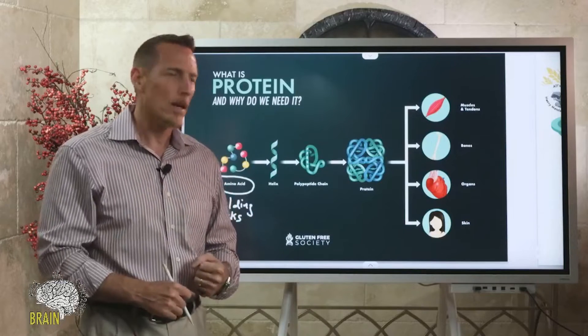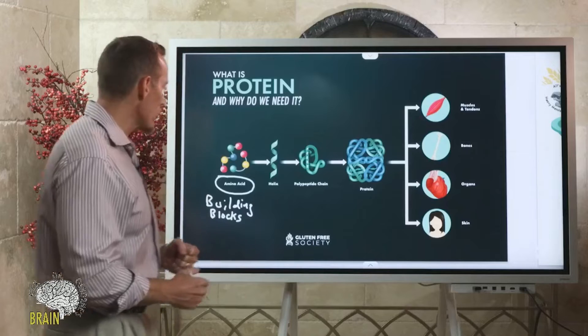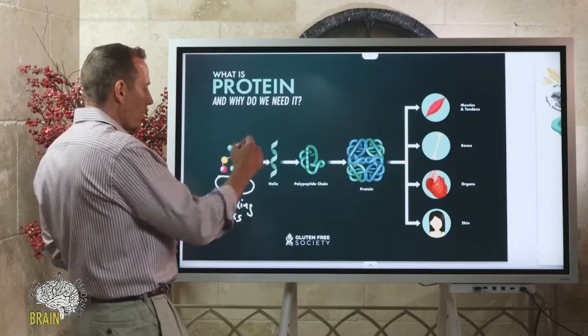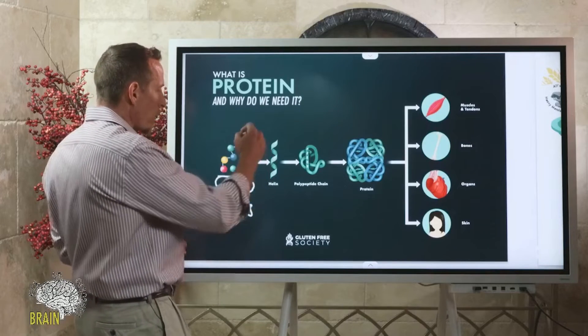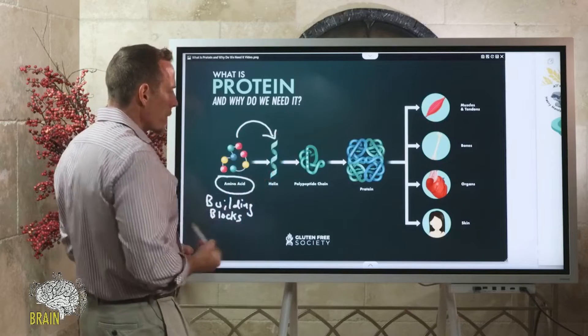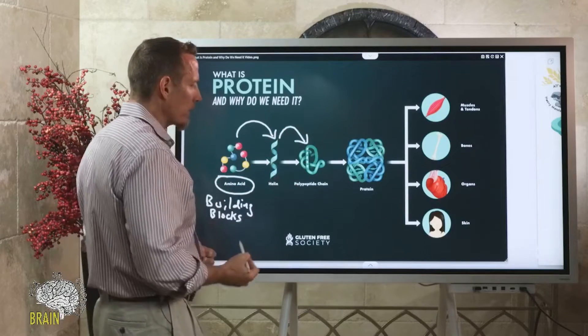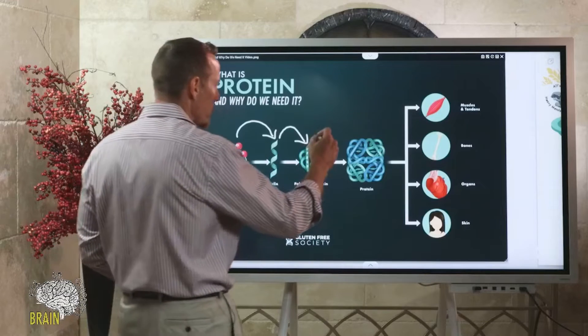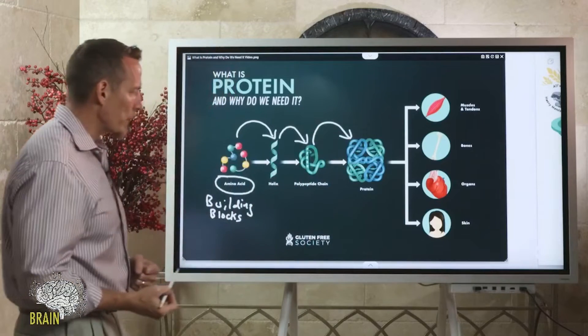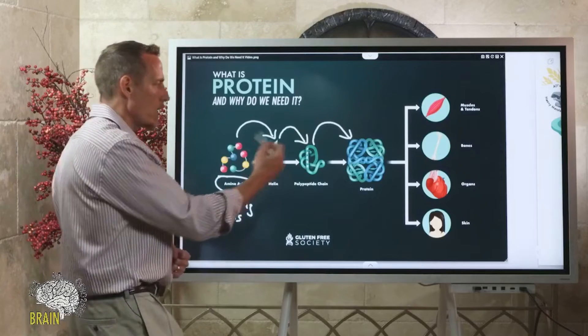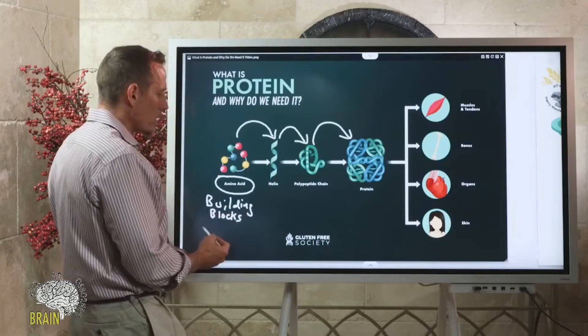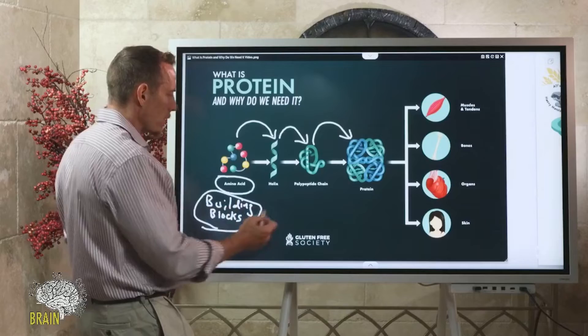Protein forms, or amino acids form helixes, and then these helixes go on to form greater polypeptide chains or structures. These structures go on to form what's called a protein. There's kind of an ascension of what happens from the building block of the amino acid all the way through to the production of a protein.